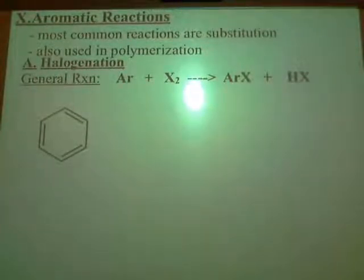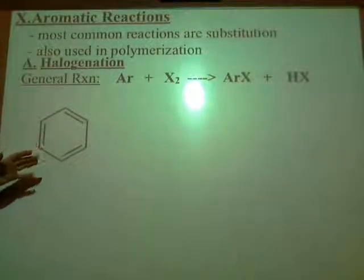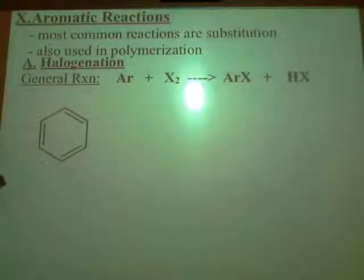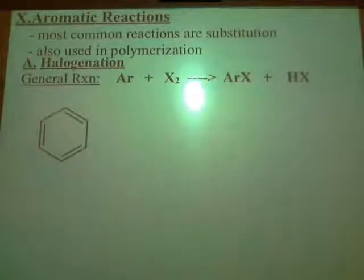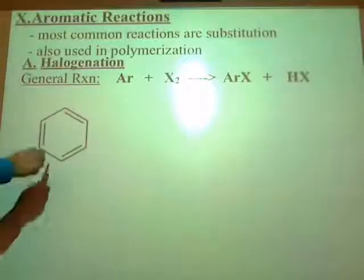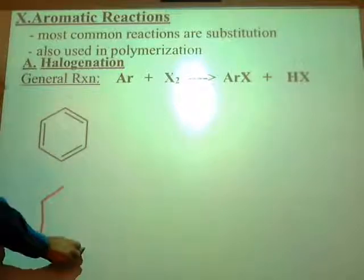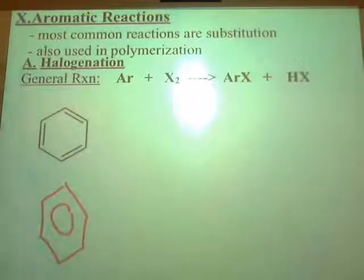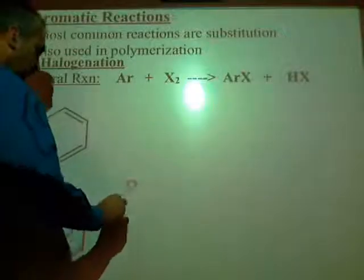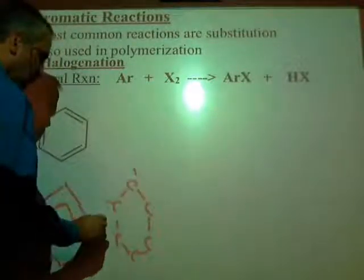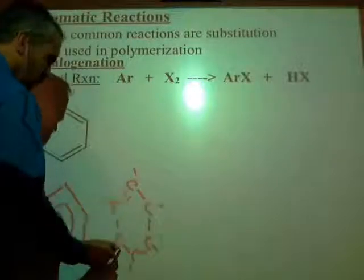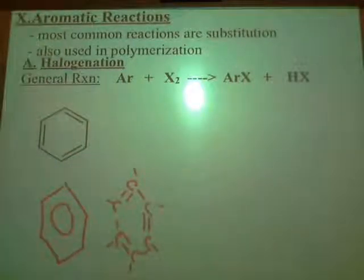Let's draw this guy first. Say I've got just a simple ring with nothing else on it — what would I call him? He is not cyclohexane. He's benzene, because he has the alternating double bonds, which actually aren't really alternating double bonds — it really is a resonance structure. There are a lot of ways I could draw that guy, including drawing it with the actual carbons, hydrogens, and double bonds.